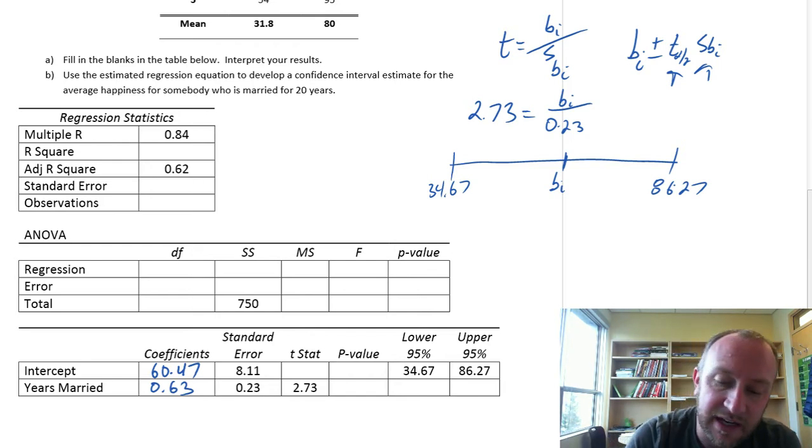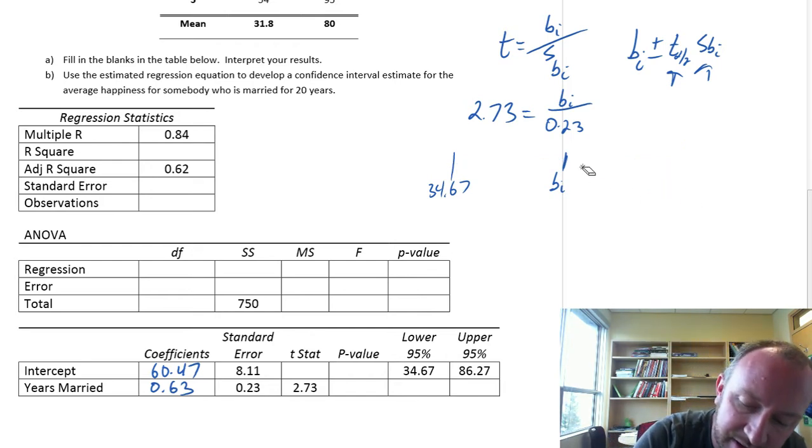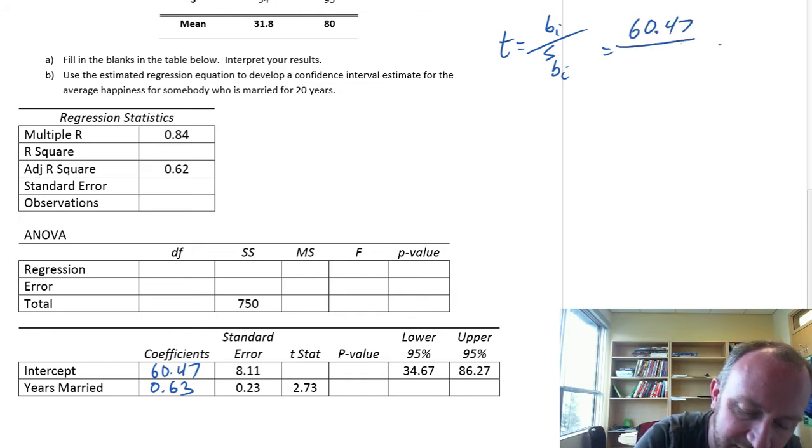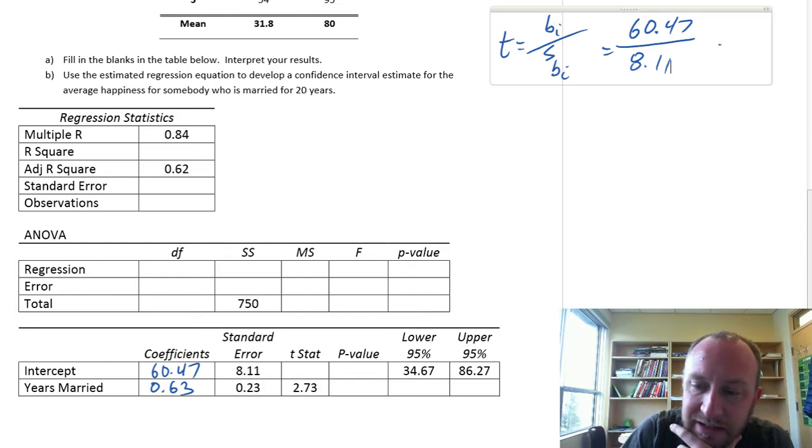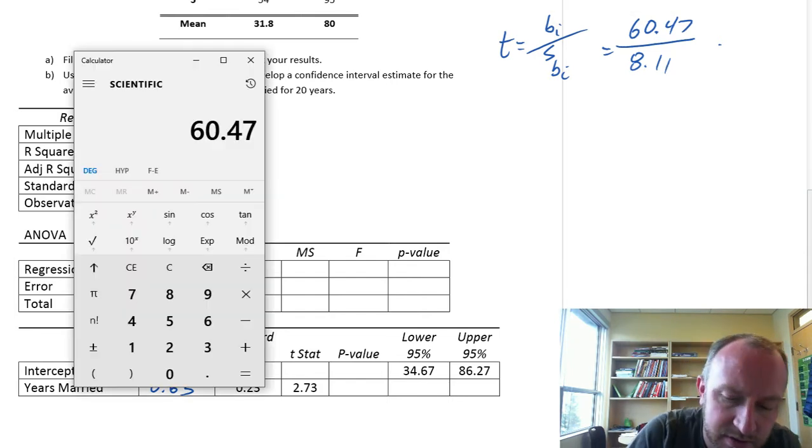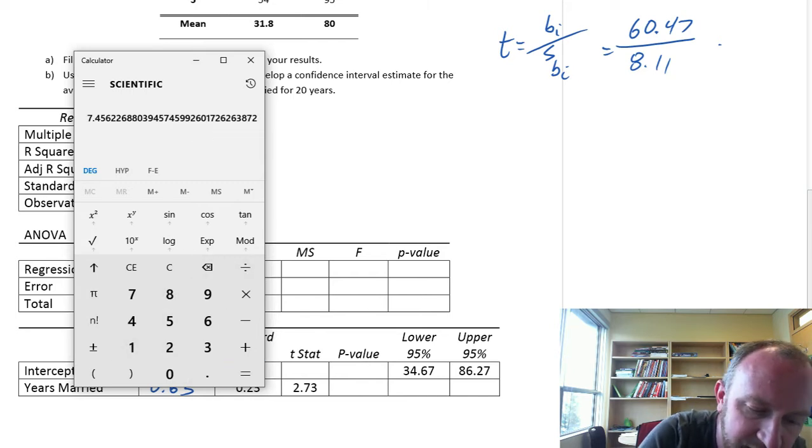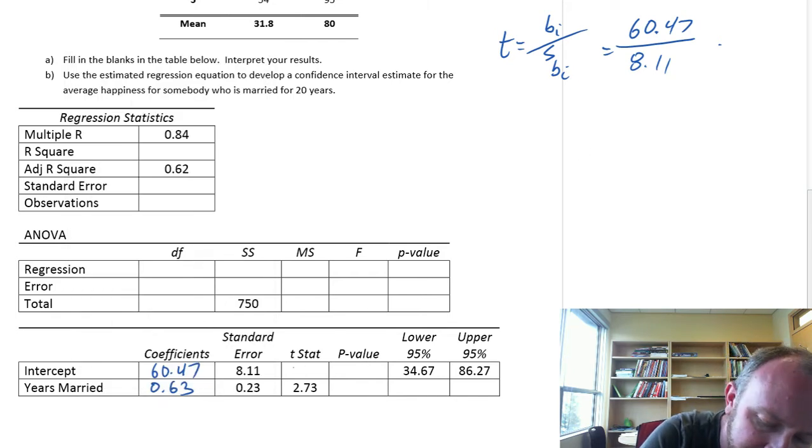Standard error we have, now we can get that t statistic using the same formula. So now we have the coefficient is 60.47, standard error we have is 8.11. So this divided by 8.11 is 7.45.